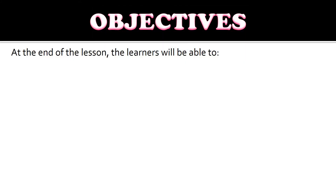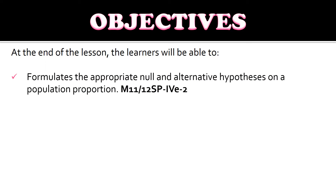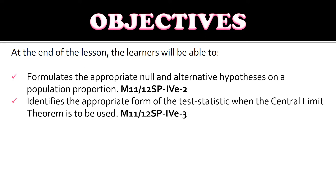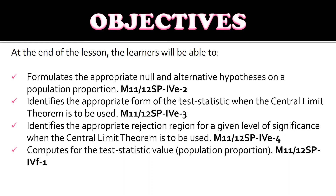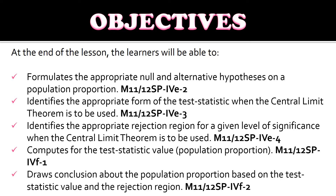For today's objectives, at the end of the lesson, the learners will be able to: formulate the appropriate null and alternative hypothesis on a population proportion; identify the appropriate form of the test statistic when the central limit theorem is to be used; identify the appropriate rejection region for a given level of significance when the central limit theorem is to be used; compute for the test statistic value of the population proportion; and draw conclusions about the population proportion based on the test statistic value and the rejection region.